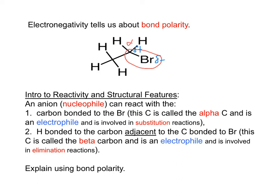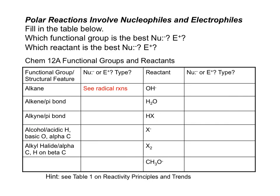The carbon adjacent to the alpha carbon is called the beta carbon, and the H bonded to that beta carbon is involved in elimination reactions, which we will also look at later in this course. This table shows the functional groups and structural features that we will look at in this course, as well as various reactants which react with these functional groups.